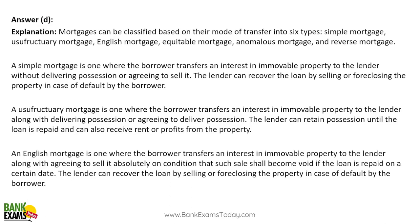In a simple mortgage, you take a home loan — you transfer the interest in the immovable property but possession is not transferred. In a usufructuary mortgage, the borrower transfers an interest in the immovable property to the lender along with delivering the possession or agreeing to deliver the possession — that is the major difference from a simple mortgage.